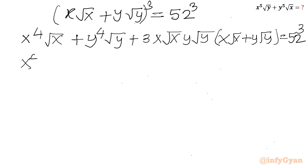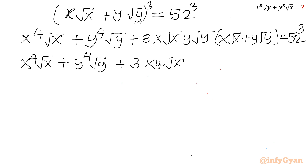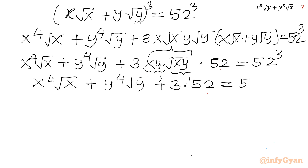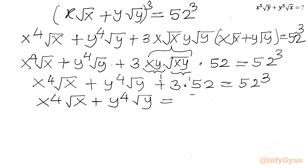So I can write x power 4 root x plus y power 4 root y plus 3 times xy times root xy times bracket x root x plus y root y equals 52 cubed. xy is 1 and root xy is 1, so the coefficient becomes 3. x root x plus y root y was 52, so 3 times 52 equals 156. Therefore x power 4 root x plus y power 4 root y equals 52 cubed minus 3 times 52, which I can factor as 52 times open bracket 52 squared minus 3 close bracket.